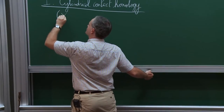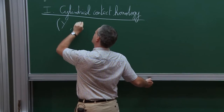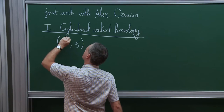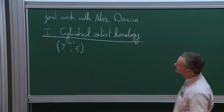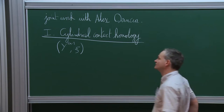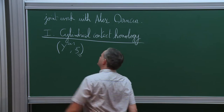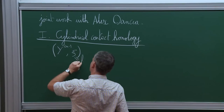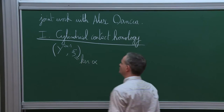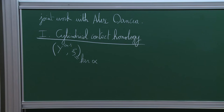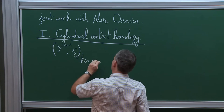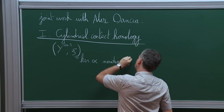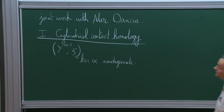Assume that your contact manifold is Y with contact structure ξ. I'll denote the dimension of the contact manifold by 2n−1. As we usually do in these theories, we assume the contact structure to be co-oriented so that it is expressed as the kernel of a one-form. I will assume that this one-form is non-degenerate, which you can always achieve by a small perturbation.